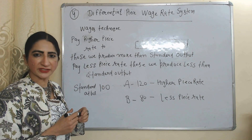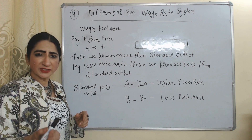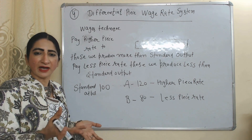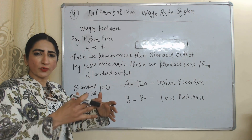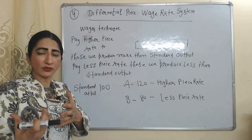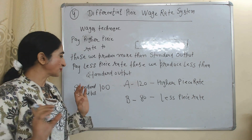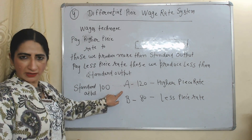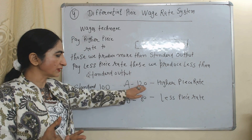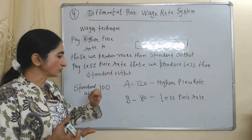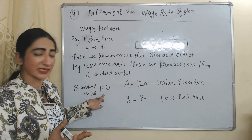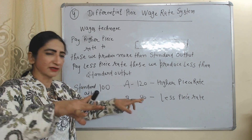Next is the differential piece wage rate system. This is a wage payment technique to motivate workers. According to this technique, we pay a higher piece rate to workers who produce more than standard output, and pay a lower piece rate to those who produce less than standard output. For example, if the standard output is 100, worker A produces 120 units — more than standard — so we pay them a higher piece rate. Worker B produces only 80 units — less than standard — so we pay them a lower piece rate.